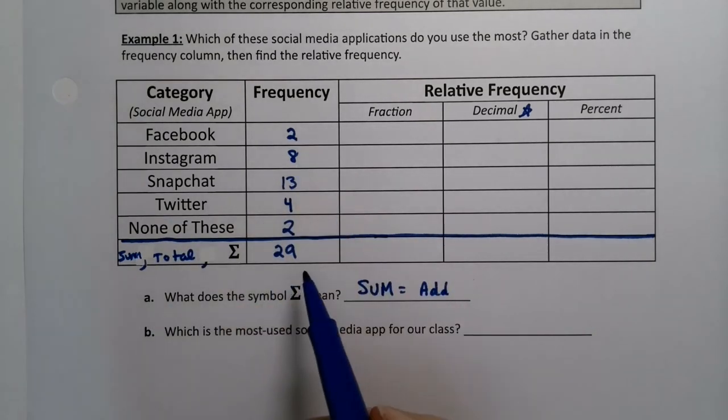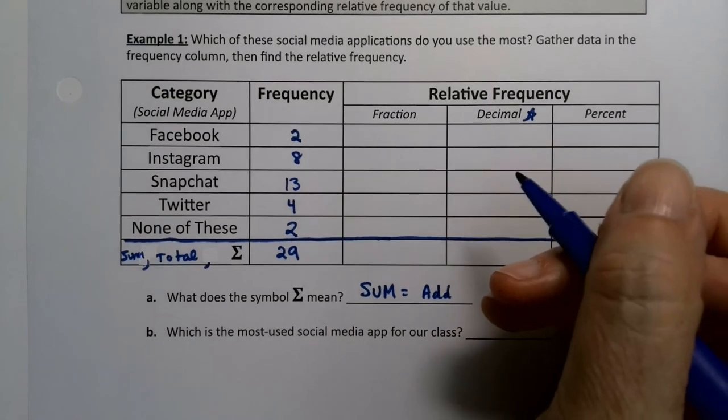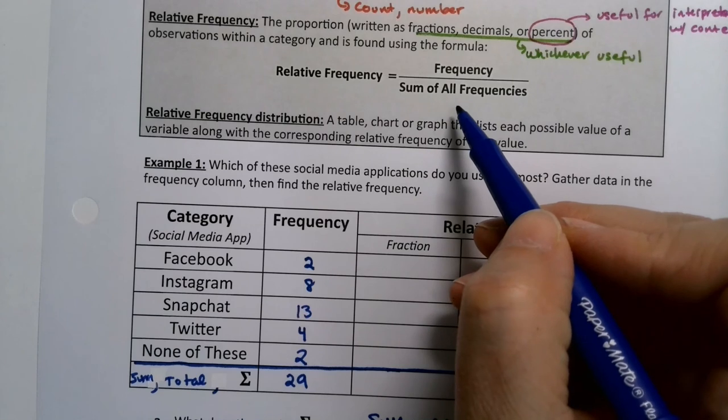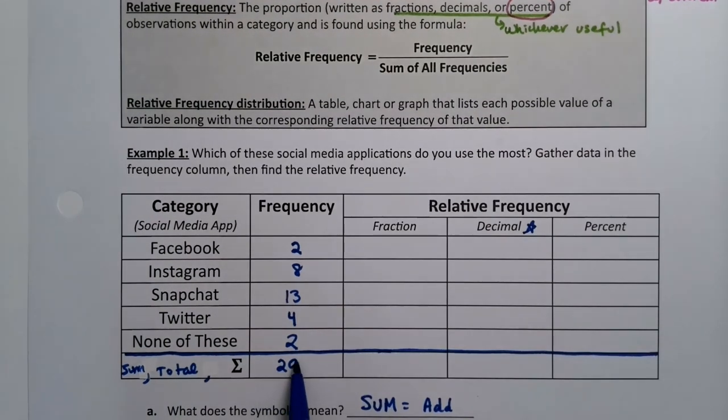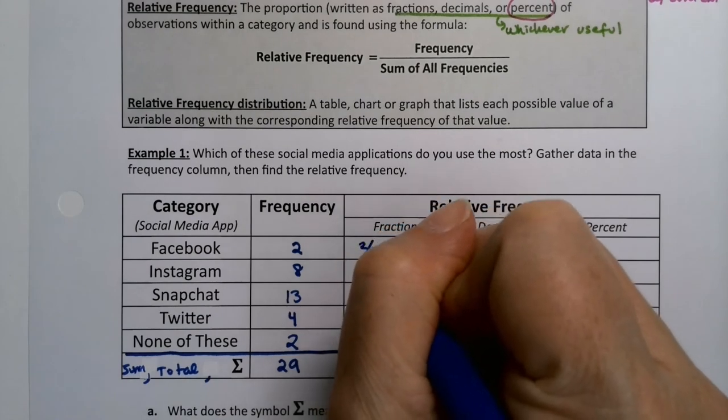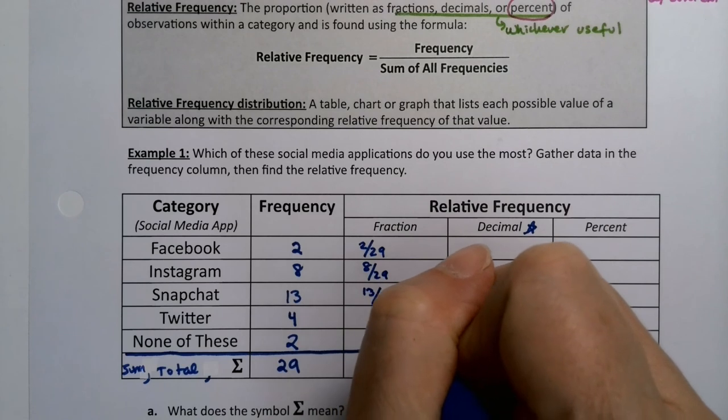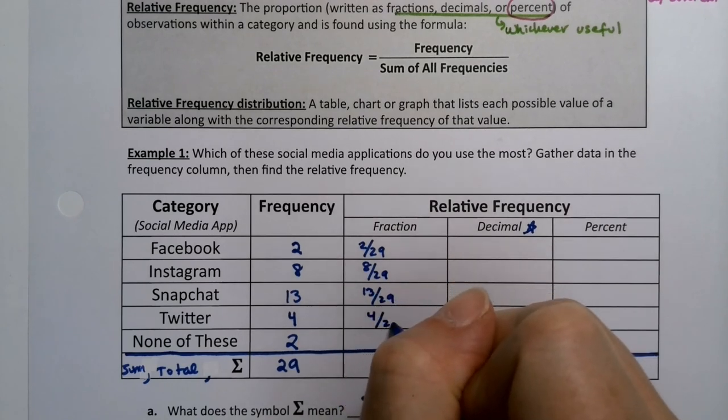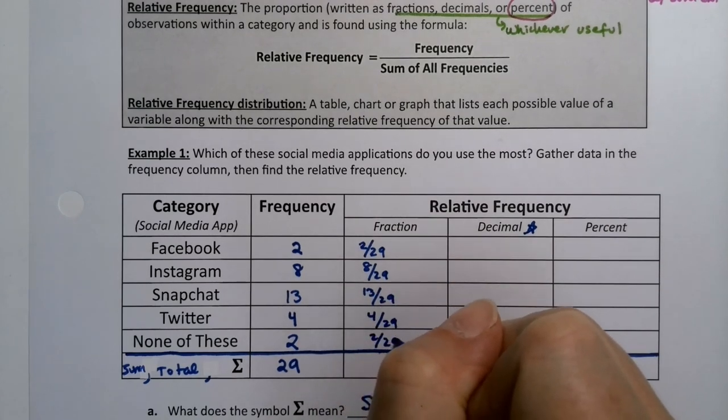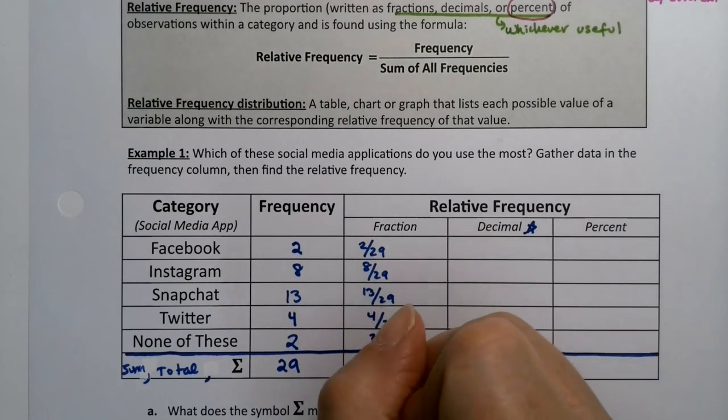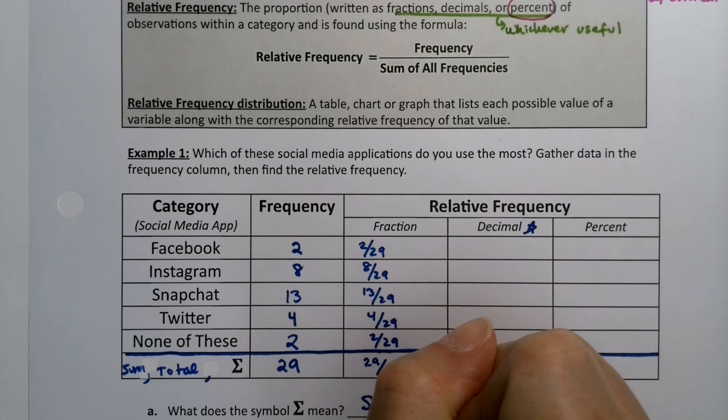Now the fraction relative frequency is easy because all you do is take the frequency of the category and divide it by the sum of all the frequencies. The sum of all the frequencies in this case is 29, so I'll take 2 and divide it by 29, 8 divided by 29, 13 divided by 29, 4 divided by 29, and 2 divided by 29. Of course, if we did this correctly we have 29 divided by 29 which is 1.